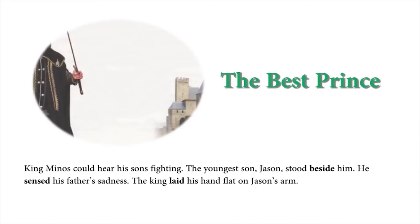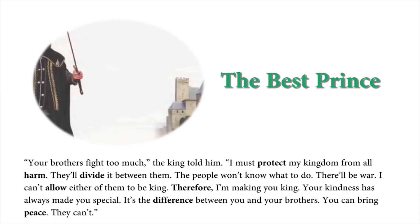King Minos could hear his sons fighting. The youngest son, Jason, stood beside him. He sensed his father's sadness. The king laid his hand flat on Jason's arm. Your brothers fight too much, the king told him. I must protect my kingdom from all harm. They'll divide it between them.